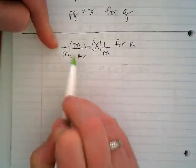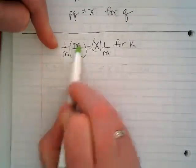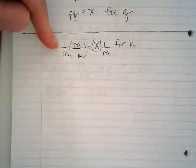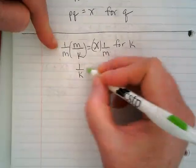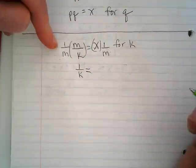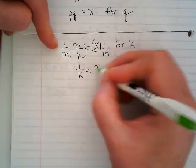Over m times k is going to turn these into being cancelled but there's still going to be a 1 over k because the k can't just be in the denominator without something above it and that leaves us with x over m.